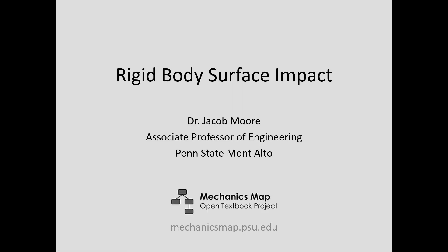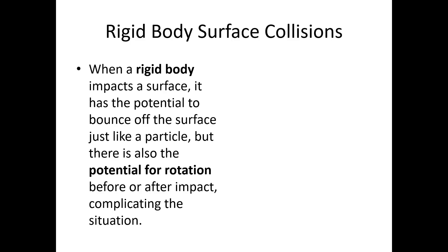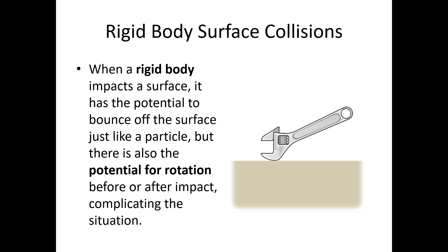Hello. For today's video lecture, we're going to be talking about rigid body surface impact. When a rigid body impacts a surface, it has the potential to bounce off the surface just like a particle, but there's also the potential for rotation before or after the impact, which is going to complicate the situation. An example of this would be dropping a wrench onto a hard surface.